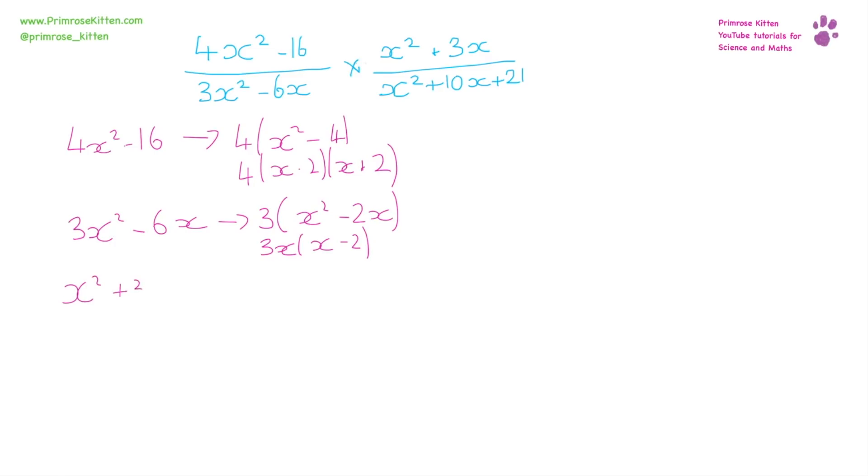x² + 3x. For this one we can just take x out of everything, giving us x(x + 3). Next: x² + 10x + 21.